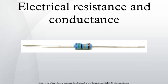Measuring resistance: An instrument for measuring resistance is called an ohmmeter. Simple ohmmeters cannot measure low resistances accurately because the resistance of their measuring leads causes a voltage drop that interferes with the measurement, so more accurate devices use four-terminal sensing.